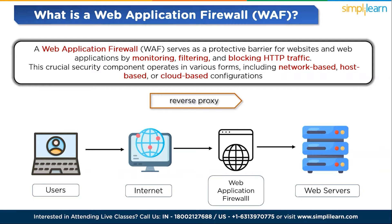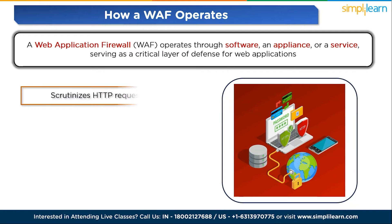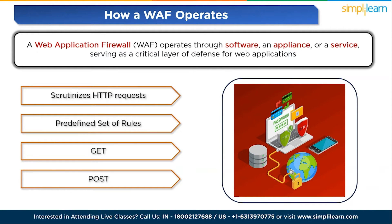Now let's see how a WAF operates. A web application firewall operates through software, an appliance, or service, serving as a critical layer of defense for web applications. It meticulously scrutinizes HTTP requests, employing a predefined set of rules to distinguish between harmless and malicious elements within the communication. The core elements of HTTP conversations subjected to WAF analysis predominantly include GET and POST requests. GET requests are employed for data retrieval from the server, while POST requests facilitate the submission of data to a server for altering its state.